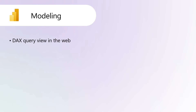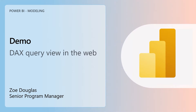Power BI Modeling. DAX Query View in the web. Write DAX queries directly on your published semantic models with DAX Query View for the web. DAX Query View is no longer only available in Power BI Desktop — it is now easily accessible when you are in the Workspace or Semantic Model Details page. Let's see a demo by Zoe Douglas.